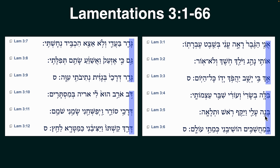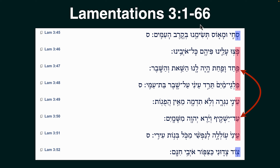In the third chapter we have an acrostic, but it's a triple acrostic — meaning the first three verses begin with Aleph, the next three with Beth, the next three with Gimel, and so on. Since there are 22 letters, 22 times 3 equals 66, and therefore there are 66 verses in Lamentations chapter 3. But he also interchanges Peh and Ayn again within chapter 3. What's going on?